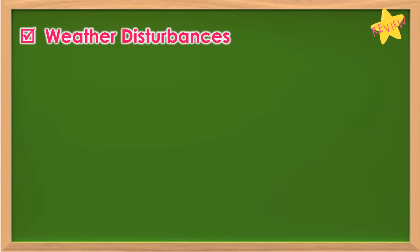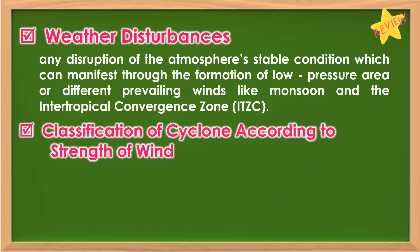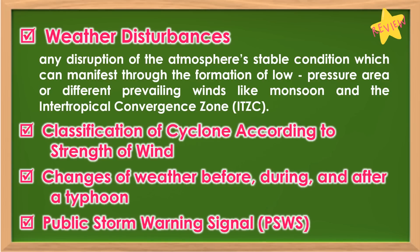You have learned in the previous lesson that weather disturbances refer to any disruption of the atmosphere's stable condition, which can manifest through the formation of low-pressure area or different prevailing winds like monsoon and the intertropical convergence zone. You have also learned the classification of cyclones according to the strength of wind, changes of weather before, during, and after a typhoon, as well as how to determine the strength of typhoon through public storm warning signals.